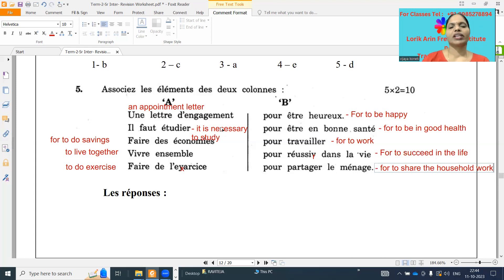And so first one is what it is. Appointment letter for what? It will be pour travailler. So for example, if you are marking it is A, B, C, D, E. First one is pour travailler, C it is. And il faut étudier, it is necessary to study, pour réussir dans la vie. Yes no? D it is, second option is there.